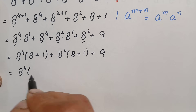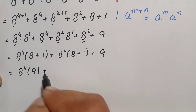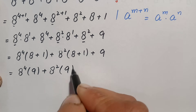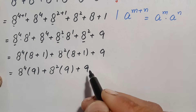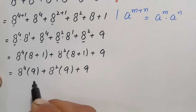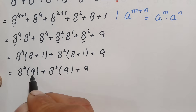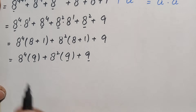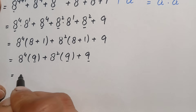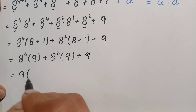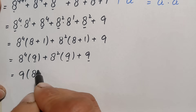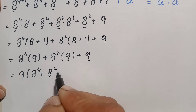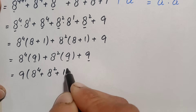This becomes: a raised to power 4 times 9, plus a raised to power 2 times 9, plus 9. Now looking at all three terms, 9 is common. We take out 9 as common from all three terms, giving us: 9 times, open parenthesis, a raised to power 4 plus a raised to power 2 plus 1.